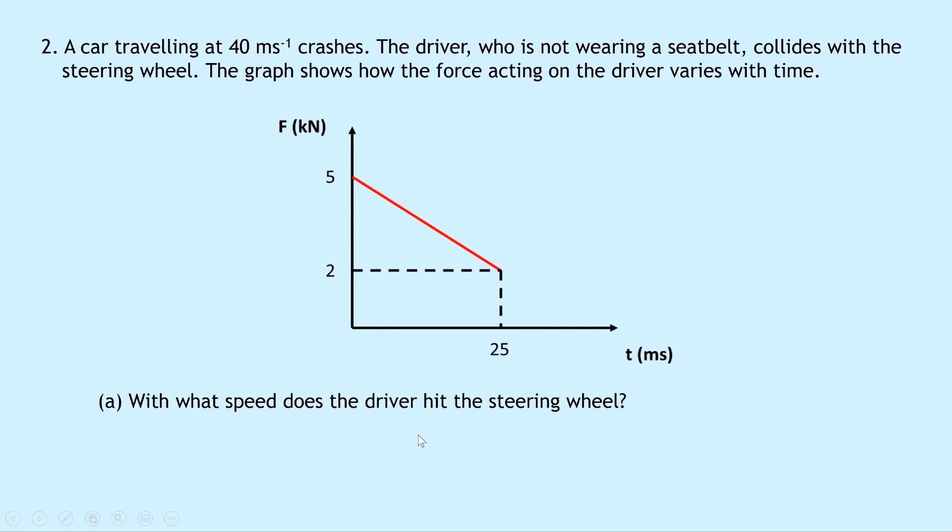So for part a with what speed does the driver hit the steering wheel? Well by Newton's first law the driver will continue to move at 40 meters per second after the crash so will hit the wheel at 40 meters per second.